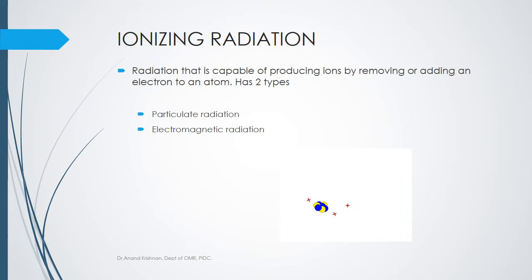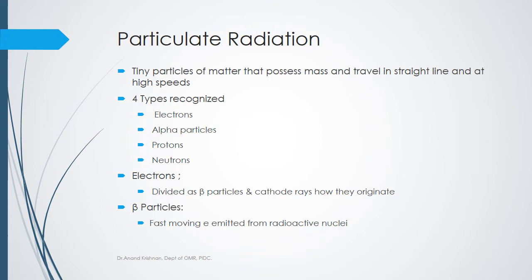Ionizing radiation is capable of producing ions. It has two types: particulate radiation and electromagnetic radiation. Particulate radiation consists of particles that have mass and energy and may or may not have an electric charge — examples include alpha particles (positively charged), beta particles (negatively charged), protons, and neutrons (no charge).